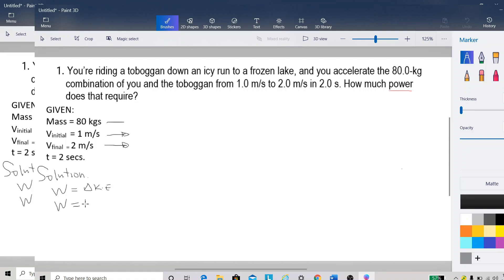So the change in kinetic energy is equal to one half times mass which is 80 kilograms, and then the final velocity is equal to two meter per seconds, and then we square that, and then minus one half.